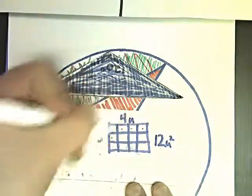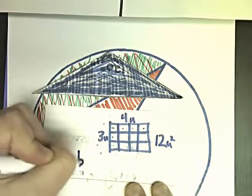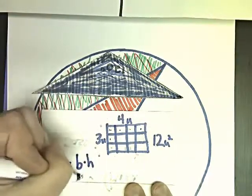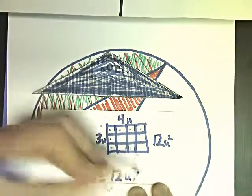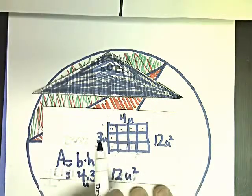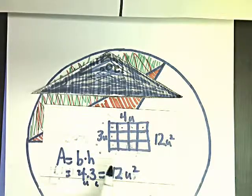And if we do the formula, base times height, well base would be 4 and height would be 3, so it is 12. So math really does have a purpose. It's base times height because 4 columns times 3 rows gives me 12, and base times height is 12 units.